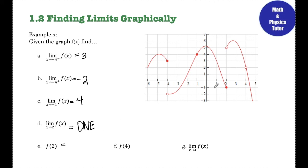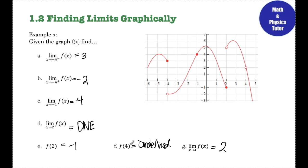Part e: find f of 2. At x equals 2, my function is defined at the closed circle, so my y value is negative 1. Although my limit doesn't exist, my function is still defined — I still have a value of negative 1 at x equals 2. For f of 4, there's an open circle there so f of 4 is undefined. This is something important to note: when a function doesn't have a y value at a given x value, the function is undefined. If there's no limit at some x value, the limit does not exist. So limits are DNE and functions are undefined.